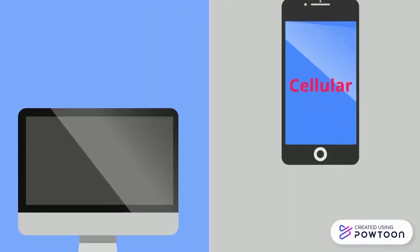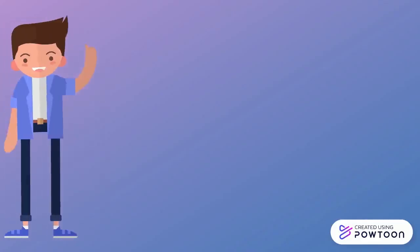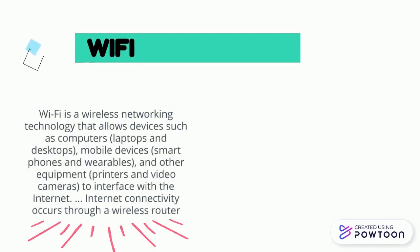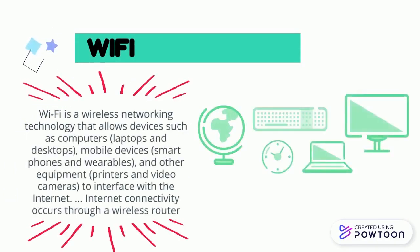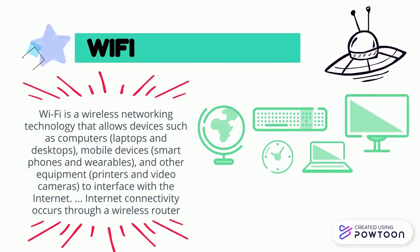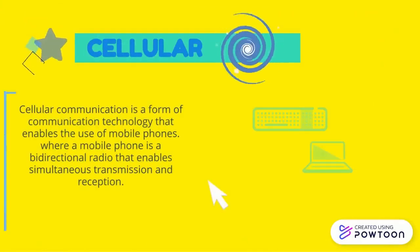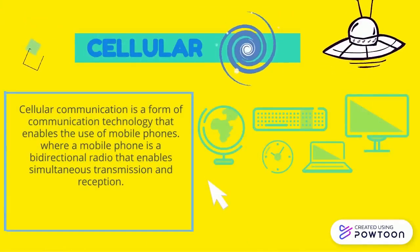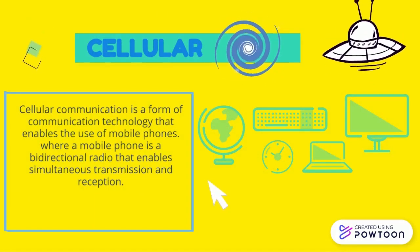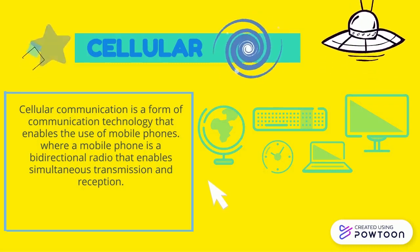Let's get into Wi-Fi and Cellular. Wi-Fi is a wireless networking technology that allows devices such as computers, mobile devices, and other equipment to interface with the internet. Cellular communication is a form of communication technology that enables the use of mobile phones, where a mobile phone is a bi-directional radio that enables simultaneous transmission and reception.